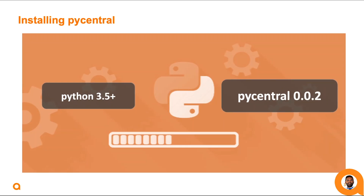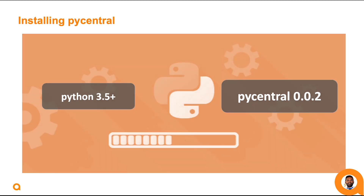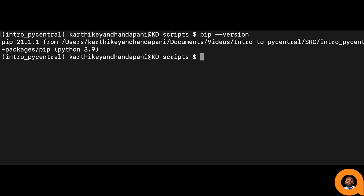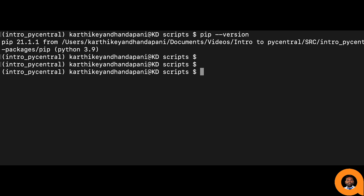Once Python version is verified, let's install the PyCentral Python package. A package in Python refers to a collection of related Python files placed in a directory. A package manager such as PIP is the preferred way to install published Python packages. To check if the PIP tool is available, enter pip --version, or for machines with multiple Python versions, pip3 --version.